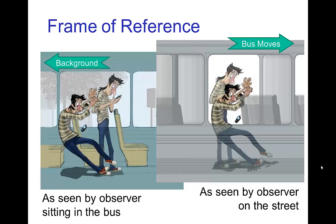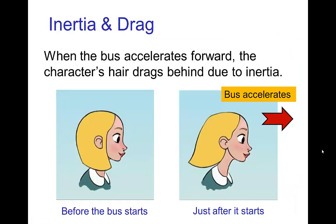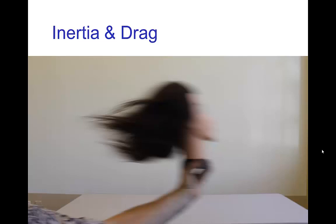To the person who's falling, they seem to be falling behind — but really, it's inertia that's causing this effect. And if we have a character sitting on the bus, when the bus accelerates forward, her hair seems to drag behind. This is just exactly the same effect as we just saw. Here's a quick video of that.